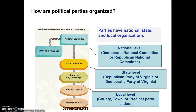Political parties have levels just like our government in general. There's a national level, a state level, and a local level. This organization is really important so that these parties can influence politics and government at each one of those levels. At the national level, you've got the Democratic National Committee or the Republican National Committee — an organization that works to achieve party goals at the national level, win national elections, and make sure that national policy favors their party.